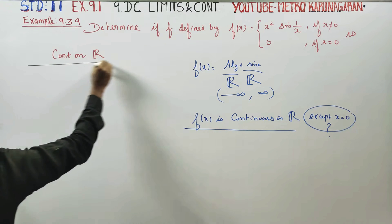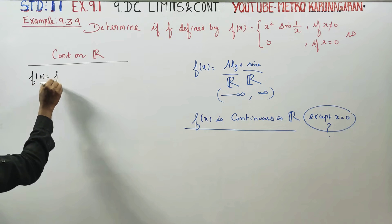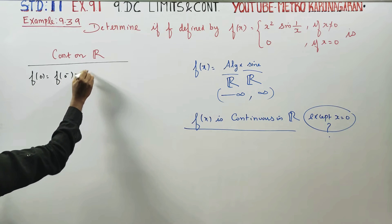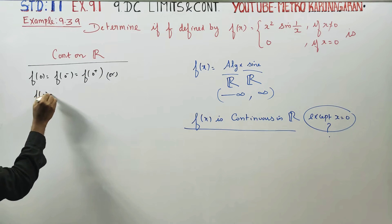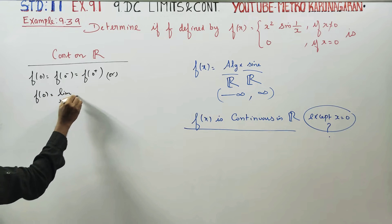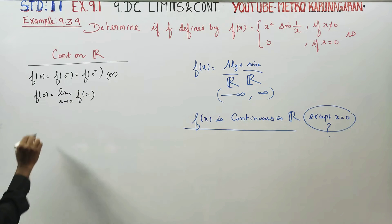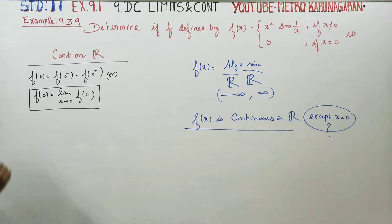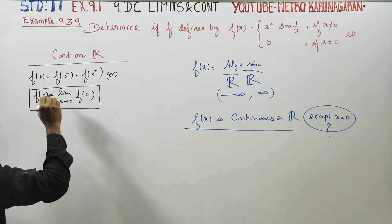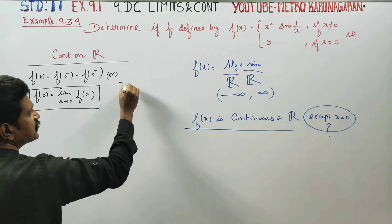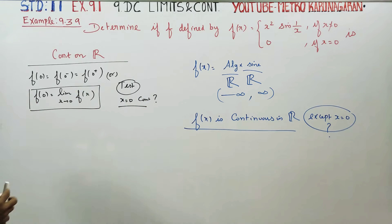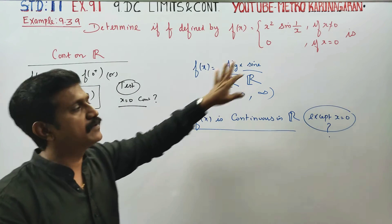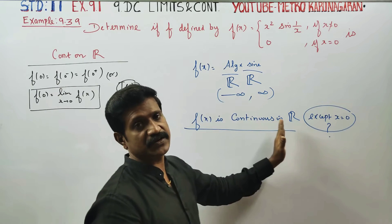It is continuous on R. We need to verify: f(0) equals the left-hand limit equals f(0) plus. F of x is continuous on R. Pause — the function f(x) is continuous on R.